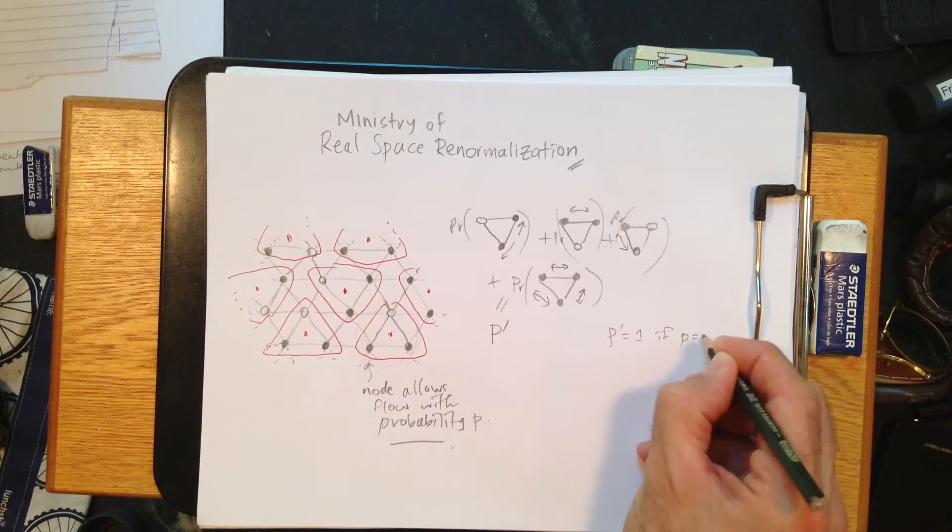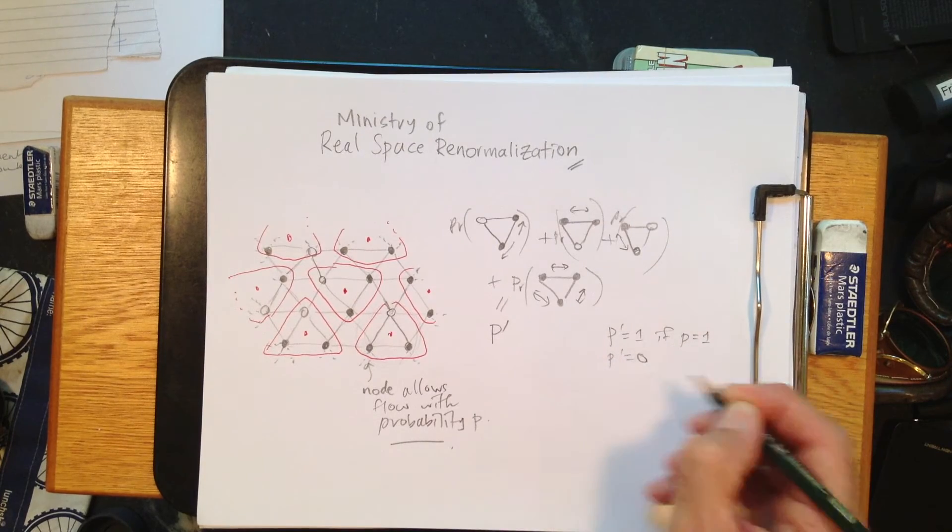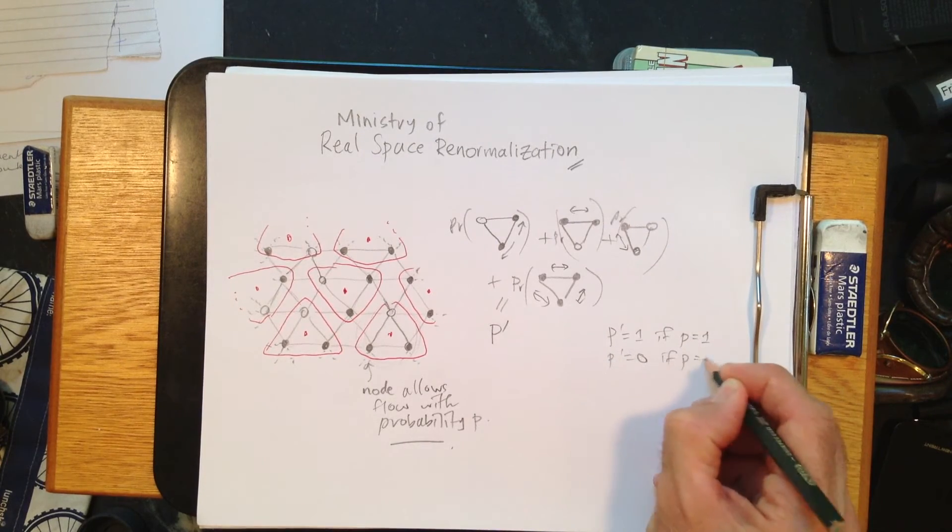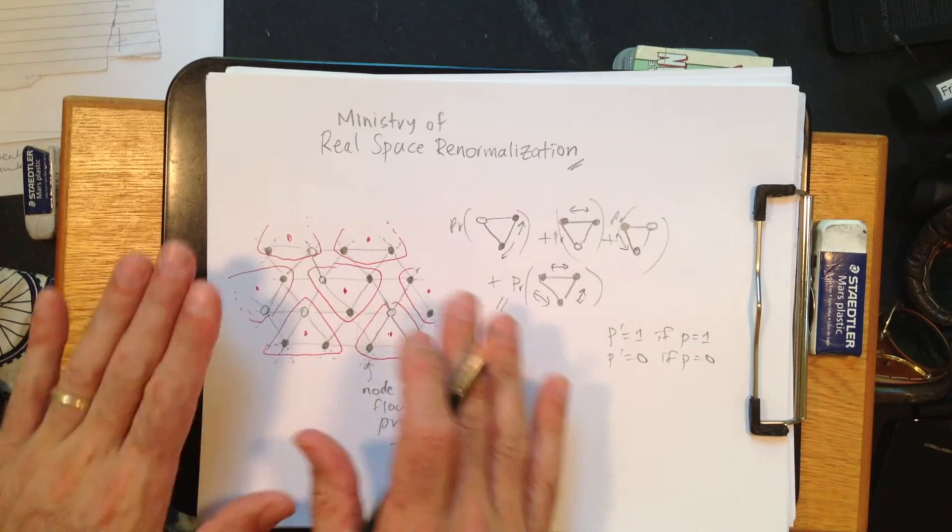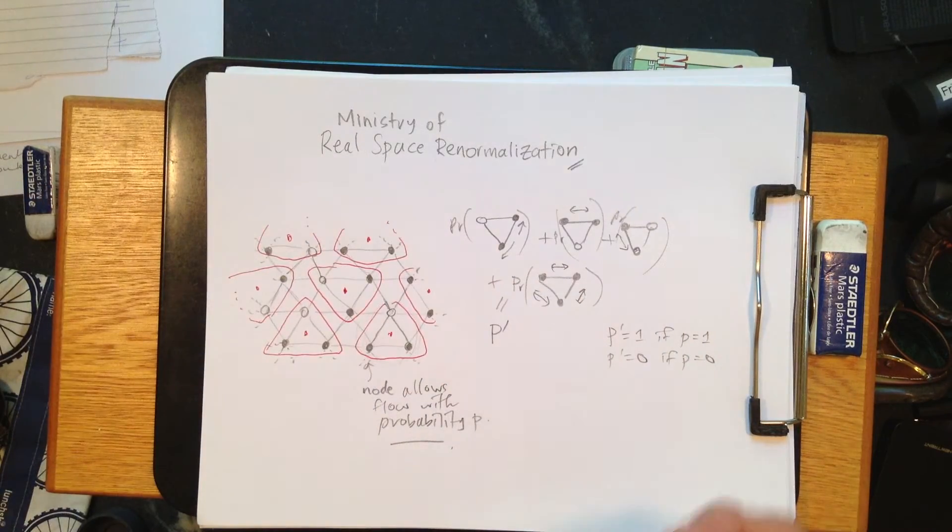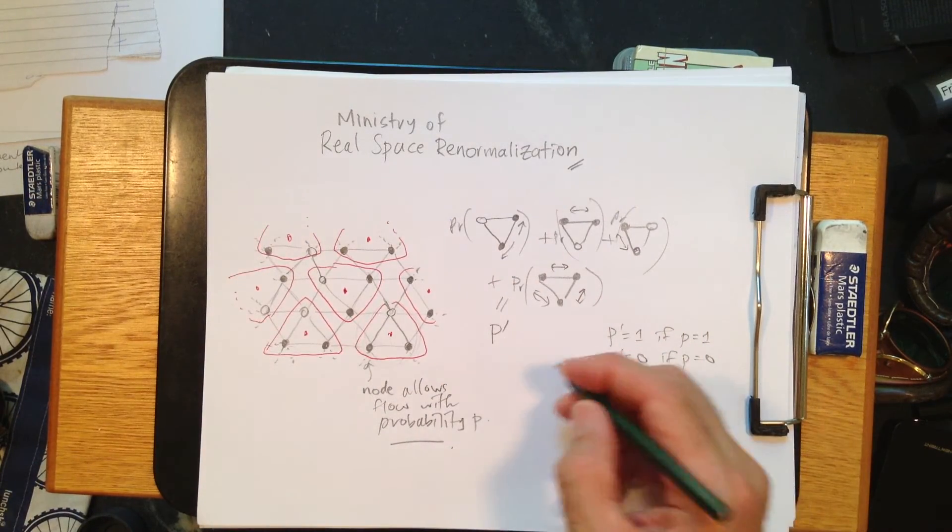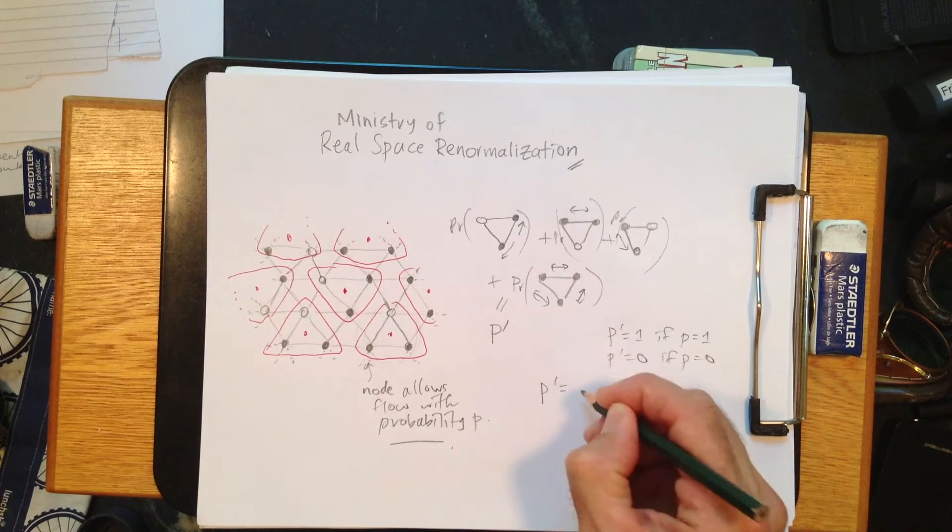If p equals zero, and so, right, so of course you do this one step, then you do another step, and so on. So it's a recursive map. So p prime is some function of p.